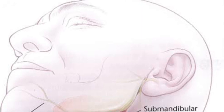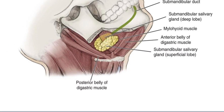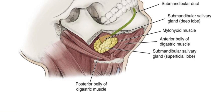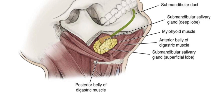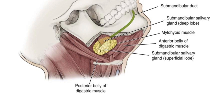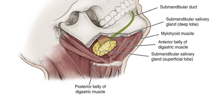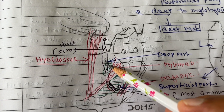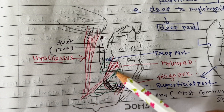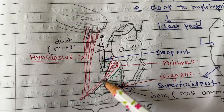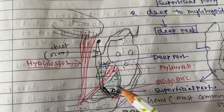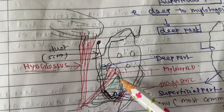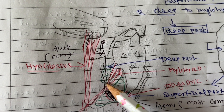The mandibular fossa can be seen in this picture. This gland has two parts: one is the superficial part, situated superficial to the mylohyoid muscle, and the deep part, which is situated deep to the mylohyoid muscle. The superficial part is the larger part and the deep part is the smaller part. The deep part is just below the mylohyoid muscle, and the superficial part is situated in the digastric triangle.